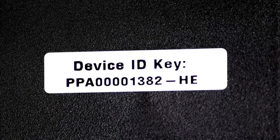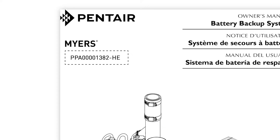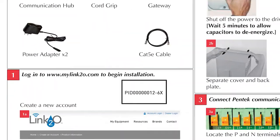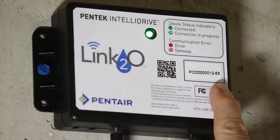You must have a router, active internet connection, and your device ID key. You can find the device ID key on a label on the front page of your owner's manual, quick start guide, or on the control box of your Link2O device.